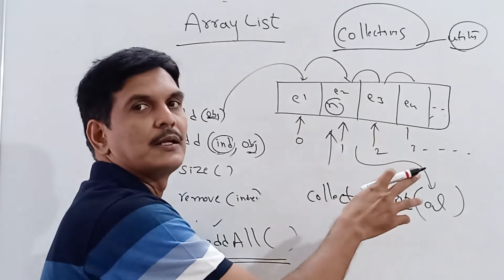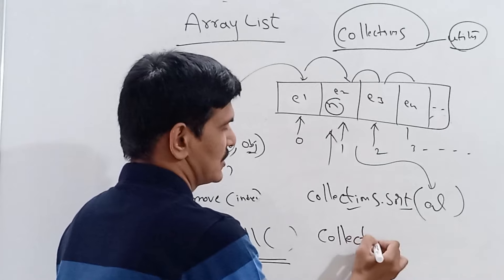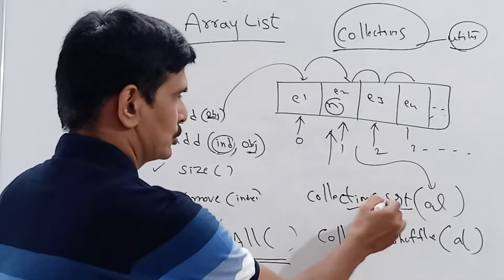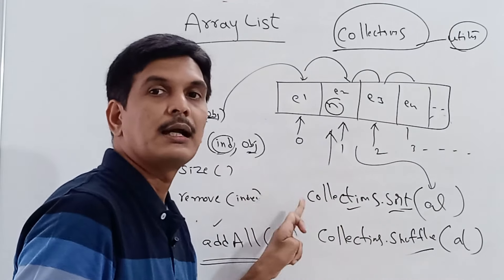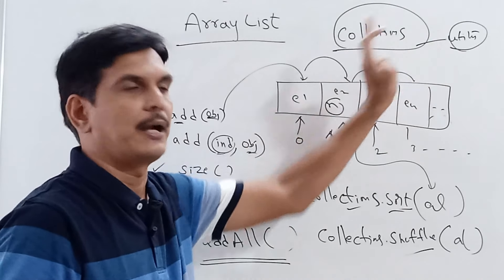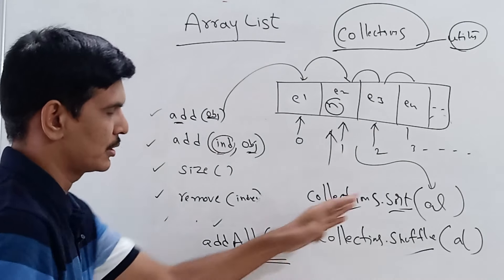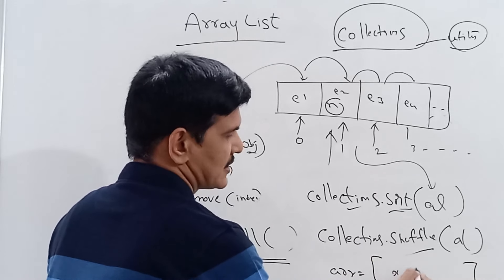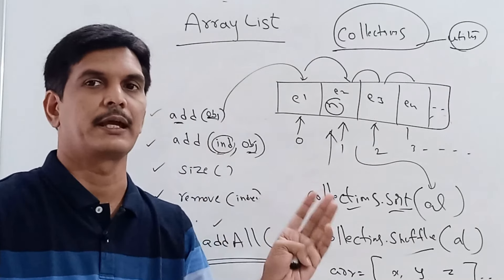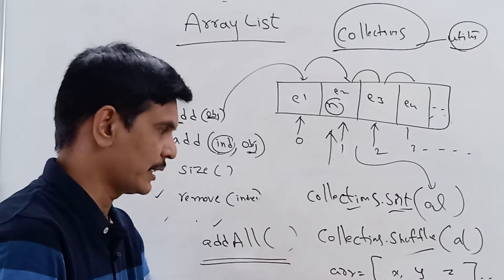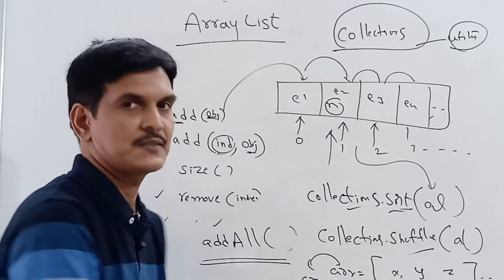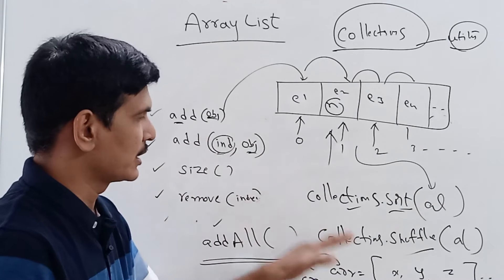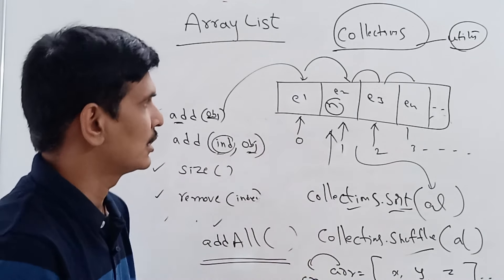For shuffling all elements in the ArrayList, use Collections.shuffle(al). These sort and shuffle methods come from the Collections class in java.util. We can also convert a normal array into an ArrayList. All these methods — sorting, shuffling, converting arrays to ArrayList — will be demonstrated practically now.